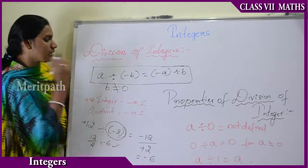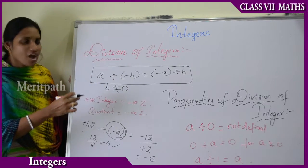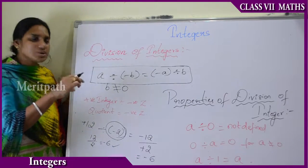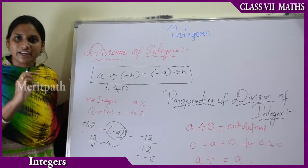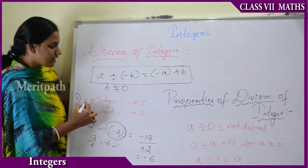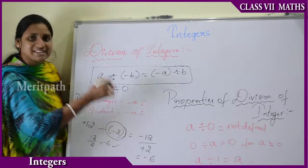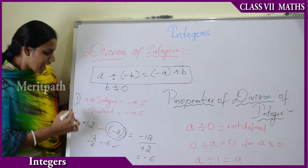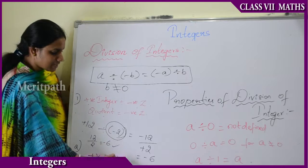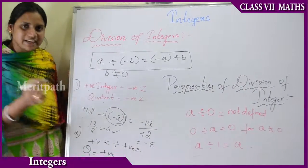Similarly, minus 12 divided by plus 2 also gives minus 6. So LHS and RHS are the same. We can conclude: when a positive integer is divided by a negative integer, or a negative integer is divided by a positive integer, the quotient is always negative.